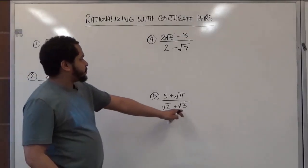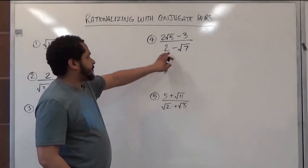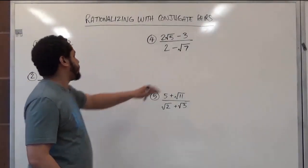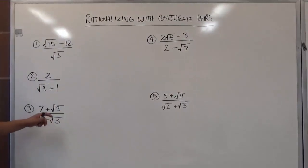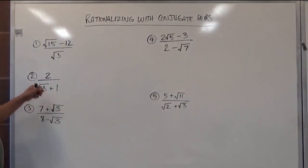Here we see we have two square roots; here we have a number minus a square root; here's another number minus a square root; a number plus a square root.